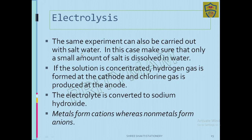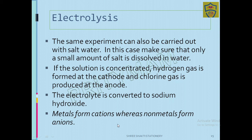The same experiment can also be carried out with salt water. Make sure only a small amount of salt is dissolved. If the salt is concentrated, hydrogen gas is formed at the cathode and chlorine gas is produced at the anode — you will not get oxygen. The liquid will be converted to sodium hydroxide. Metals form cations whereas non-metals form anions.